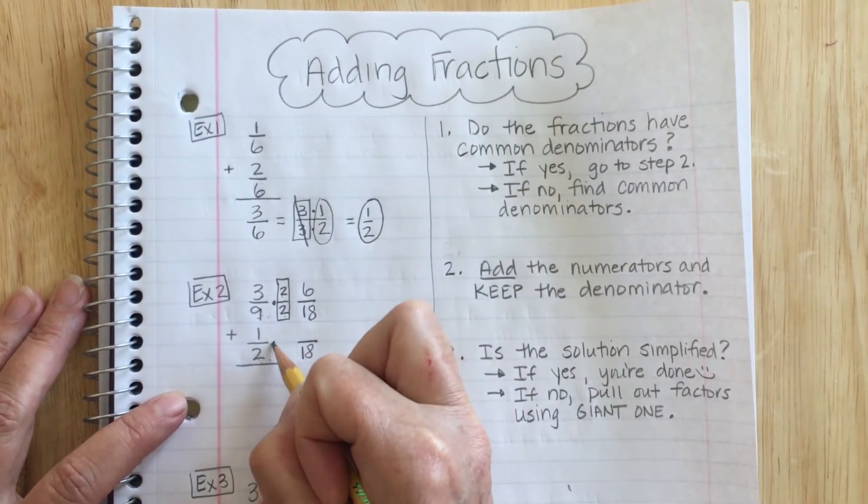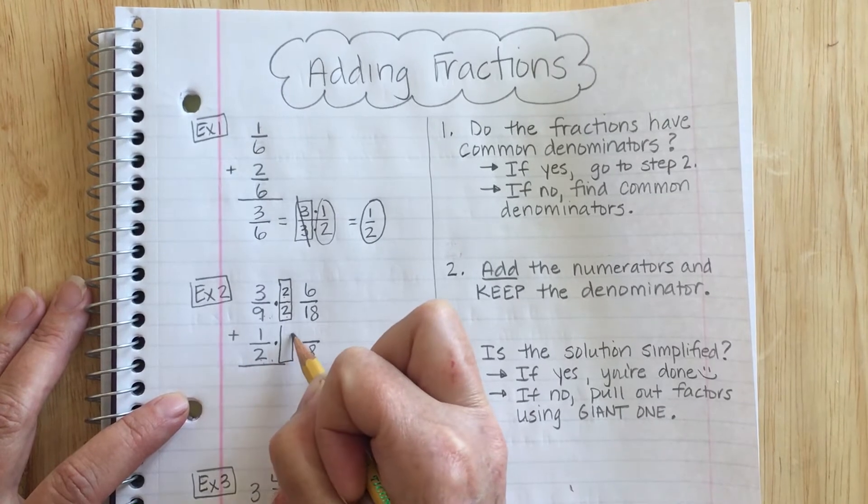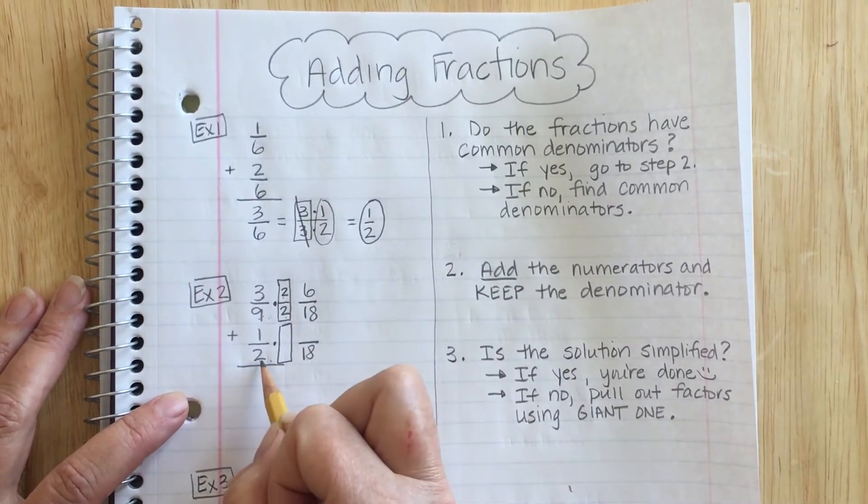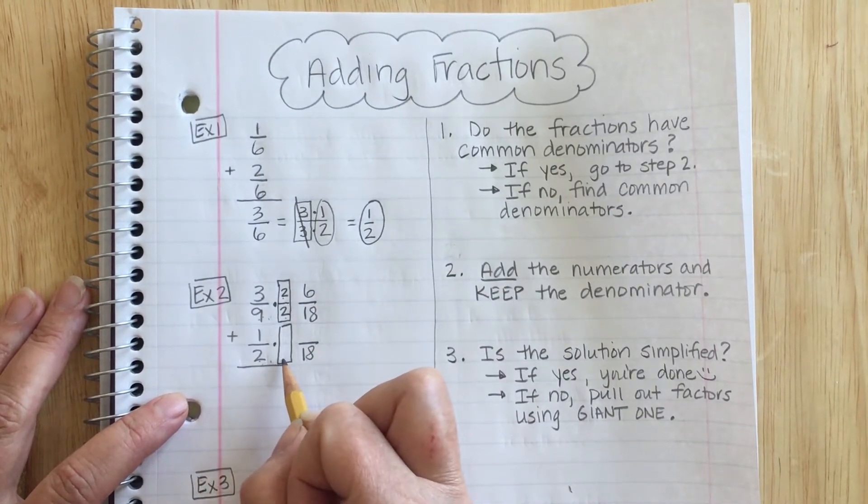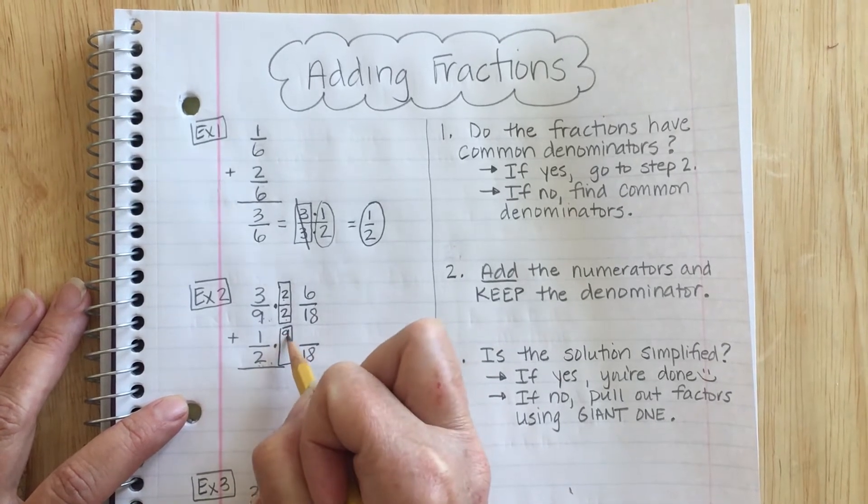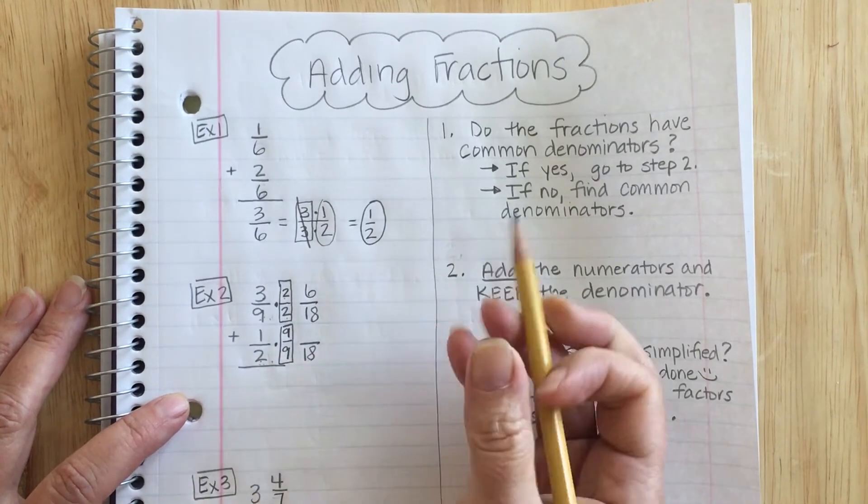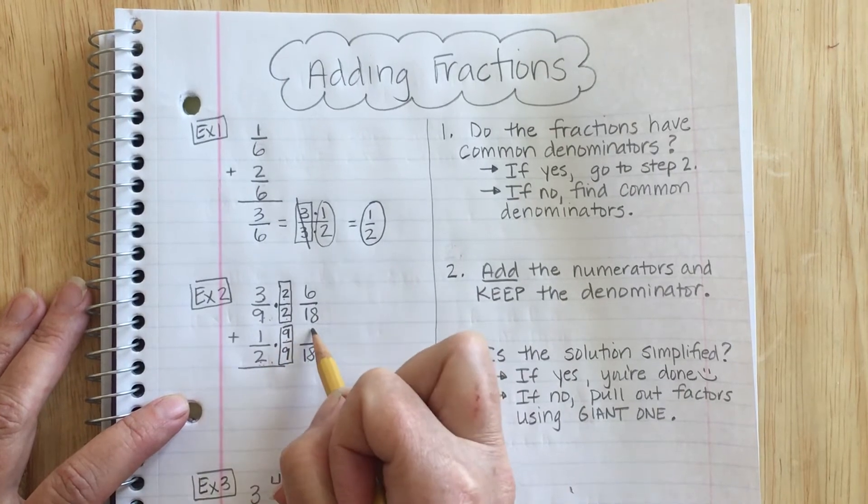In order to get from 2 to 18, I also need to multiply by a giant 1. Now what is 2 times what is 18? 2 times 9. So I'm going to write my giant 1 as 9/9. 1 times 9 is 9.